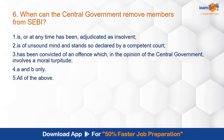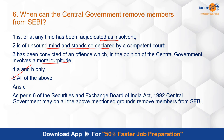Question 6: When can the central government remove members from SEBI? Grounds include: if he is or at any time has been adjudicated as insolvent; if he is of unsound mind and stands so declared by a competent court; or has been convicted of an offence which in the opinion of the central government involves moral turpitude. The correct answer is E — all of the above. In all the above cases, the central government can remove members of SEBI as per section 6 of the Securities and Exchange Board of India Act.